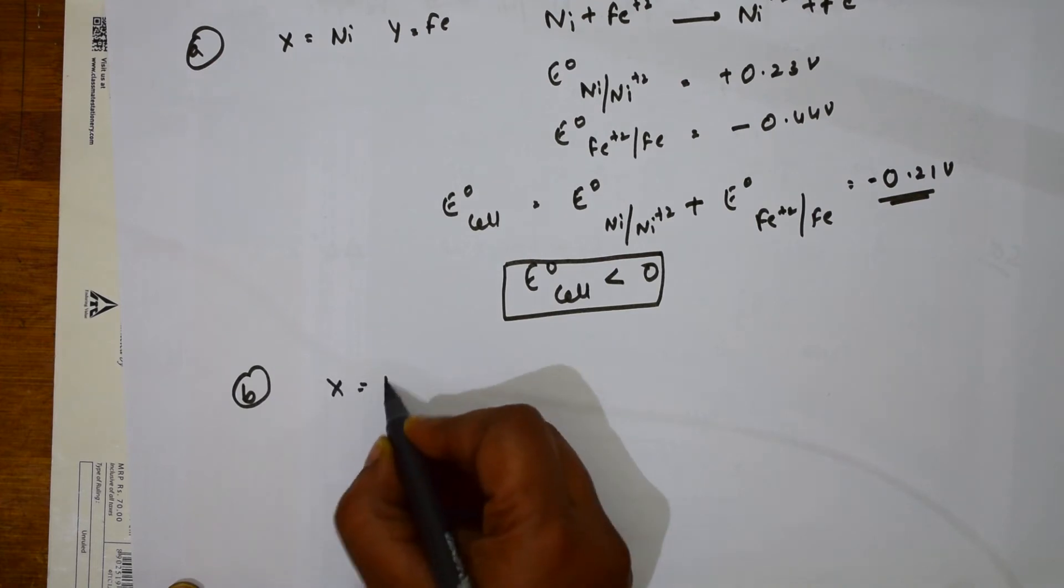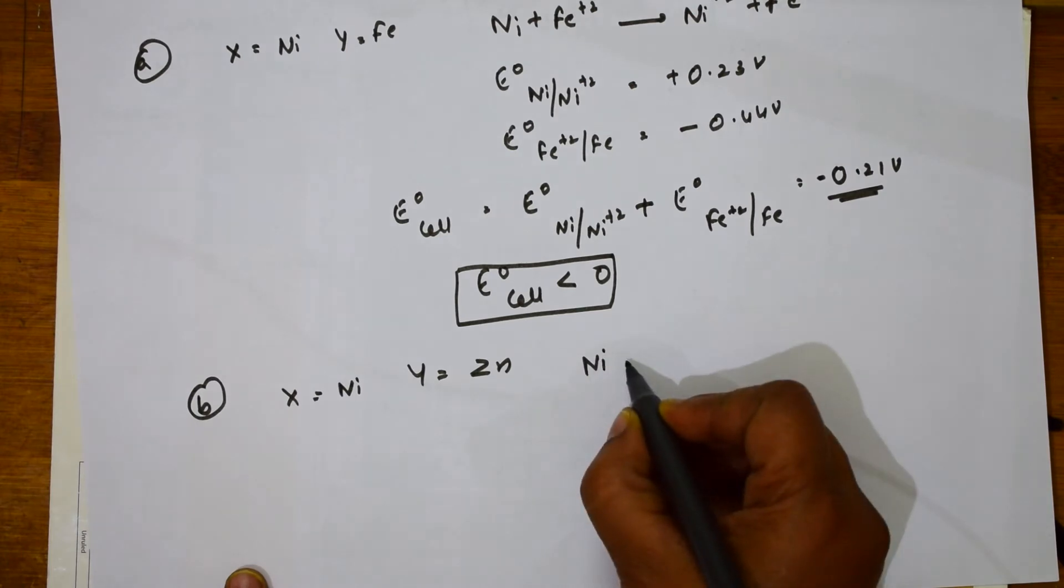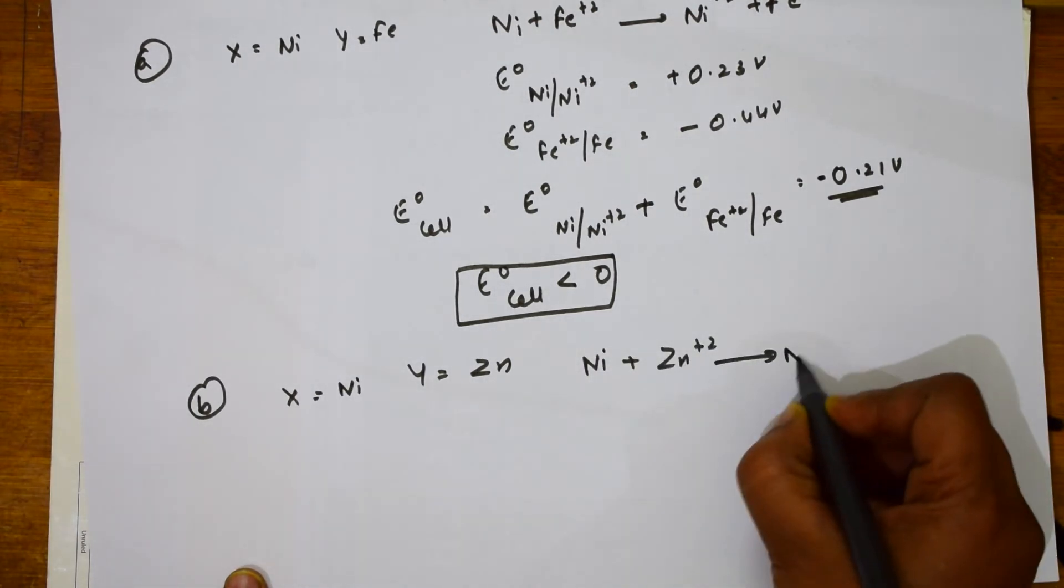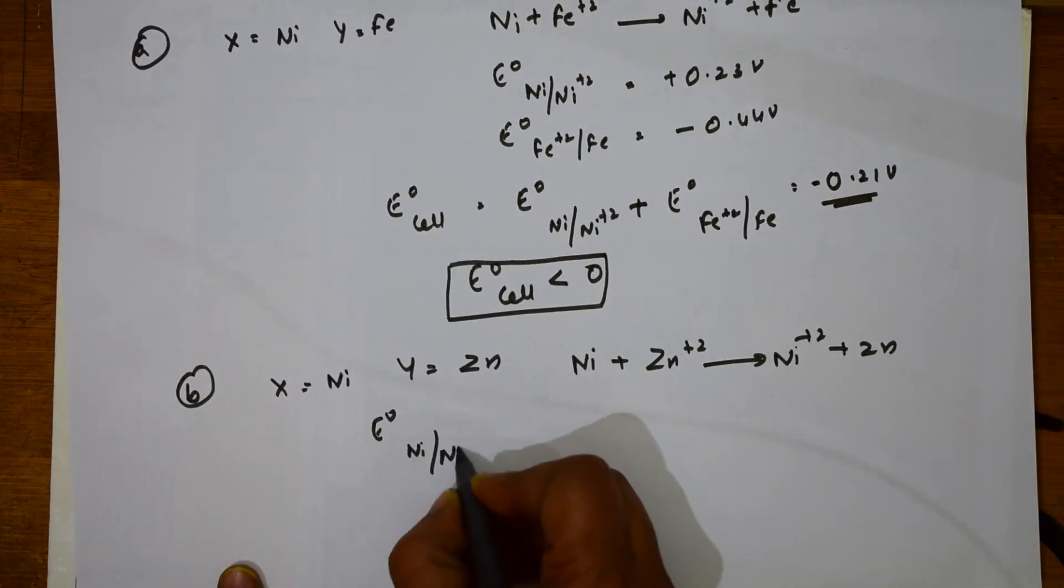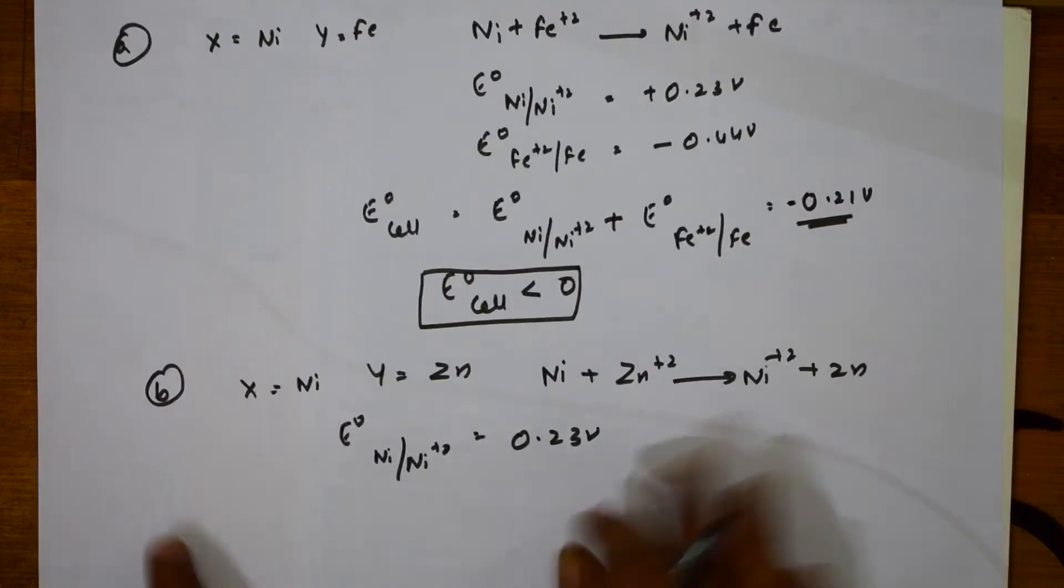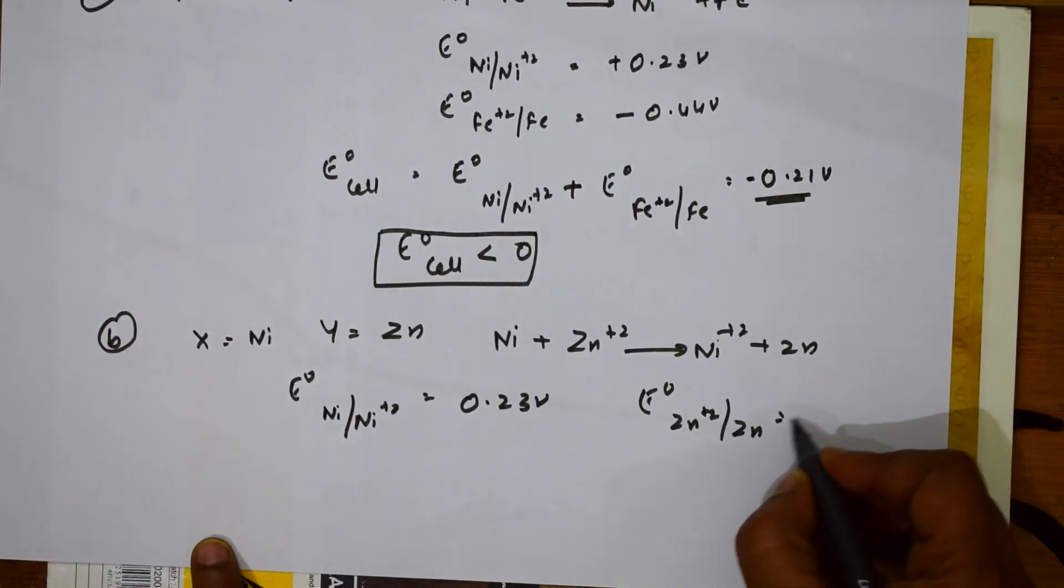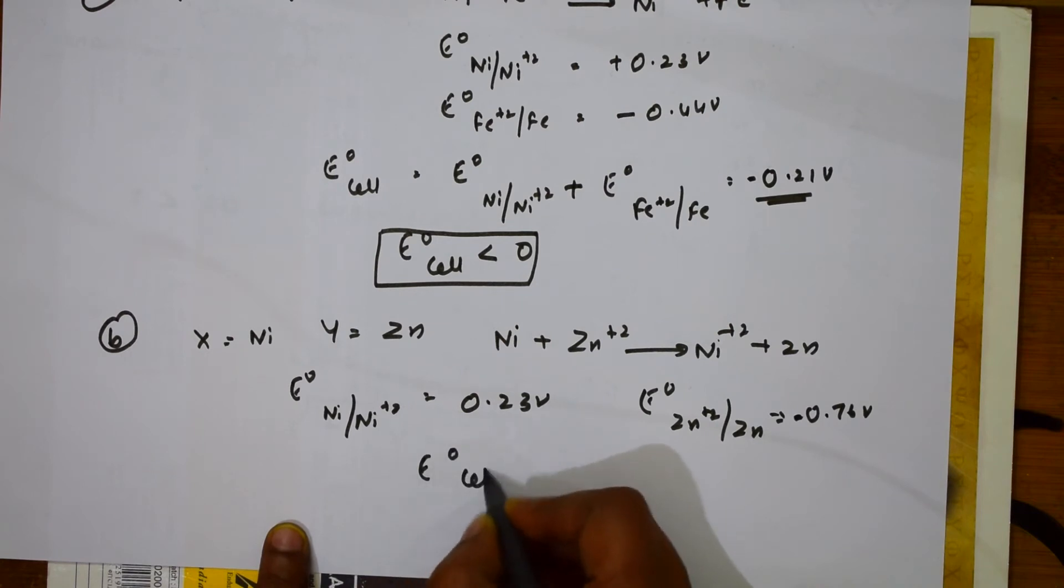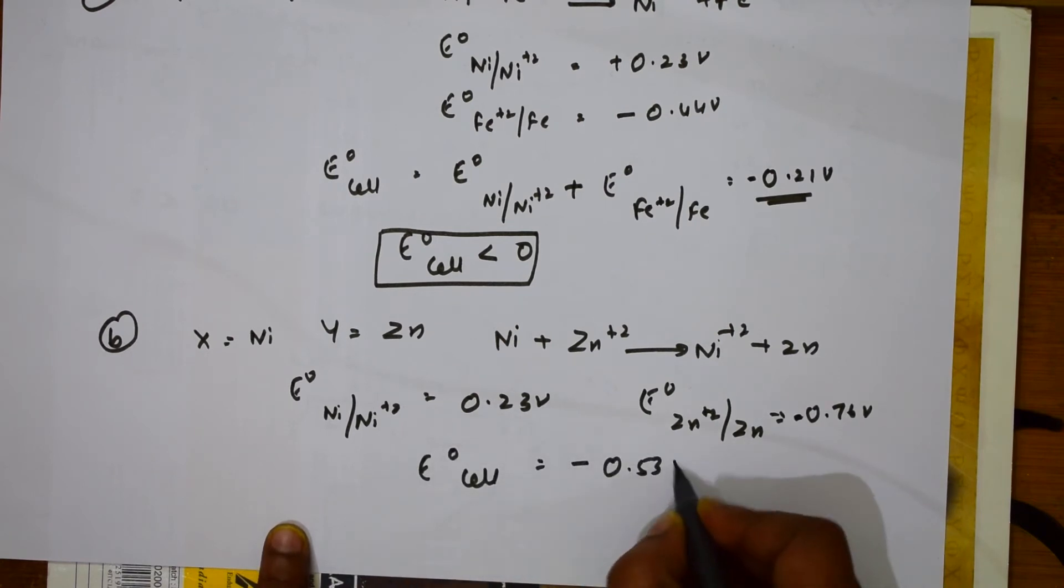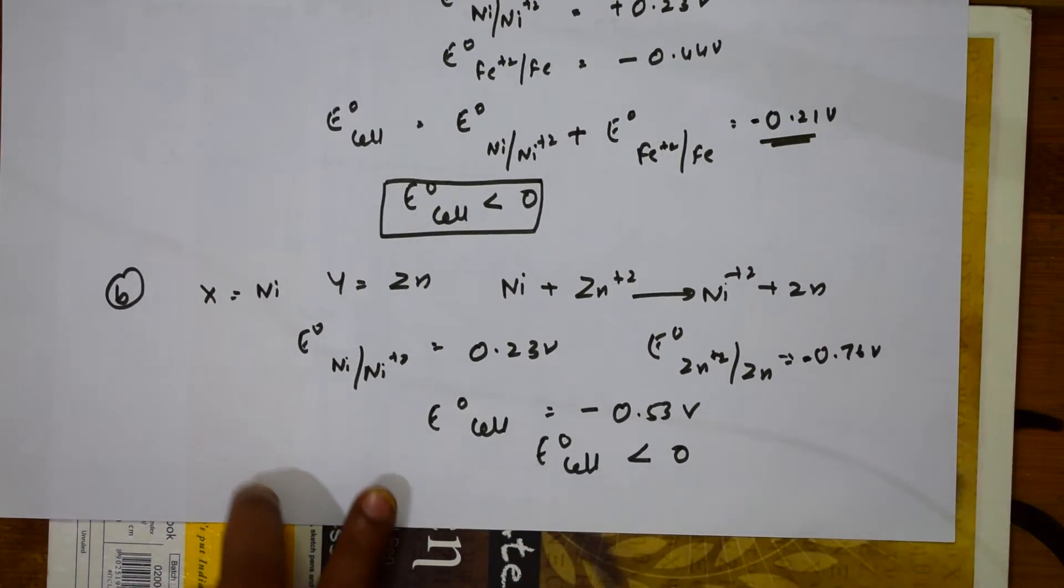Let us find the second option. Second option is X = Ni, Y = Zn. Now, write the cell reaction. Ni + Zn²⁺, you will need Ni²⁺ + Zn. E naught nickel by Ni²⁺, given value is 0.23 volts. For E naught, Zn²⁺/Zn is minus 0.76 volts. If I have to find E naught cell is equal to minus 0.53 volts. Here, E naught cell is less than 0.